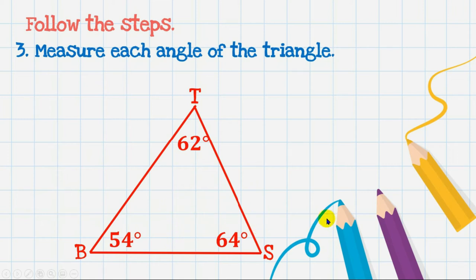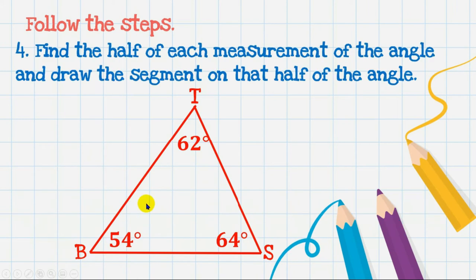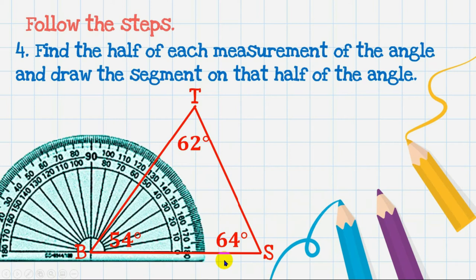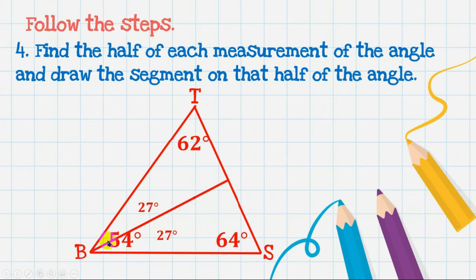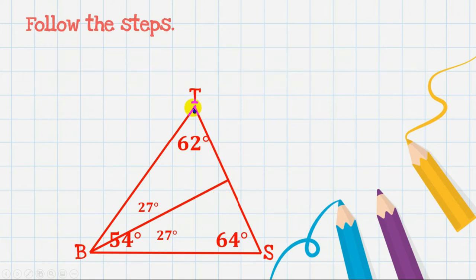Now that we've measured all angles, the next step is to find half of each angle. Half of 54 is 27, half of 62 is 31, and half of 64 is 32. Get your protractor again and mark the halfway point of 54 degrees, which is 27. Mark that point, then use the ruler to draw a straight line segment or ray from the vertex to the opposite side through the 27-degree mark.